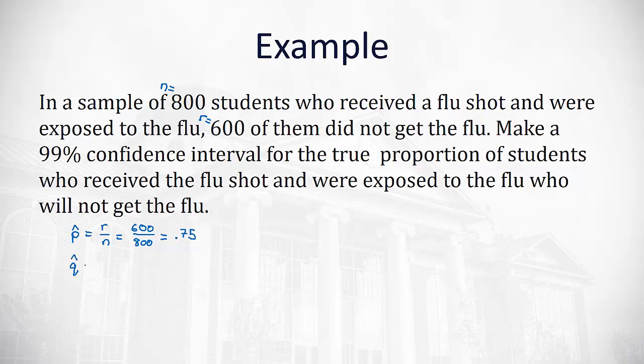Q hat, then, is the proportion of failures, which is 1 minus our p hat, or 1 minus 0.75. And that's going to be 0.25. So p hat is 0.75, q hat is 0.25. We're going to find a 99% confidence interval.